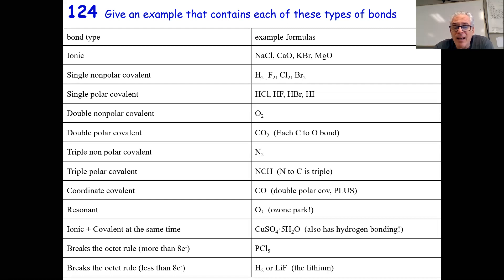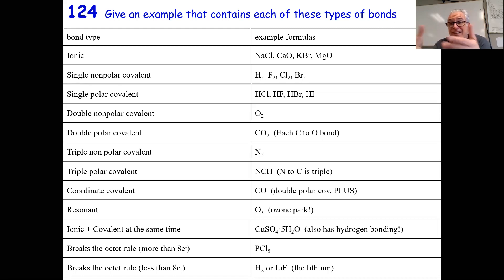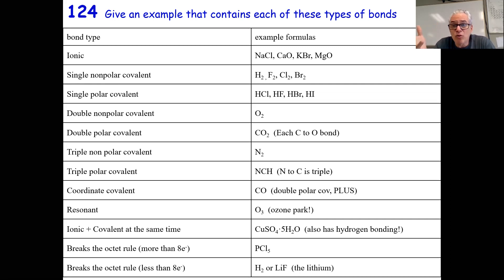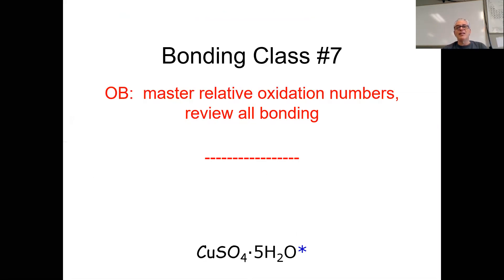Sometimes molecules break the rules. PCl₅ has phosphorus ending up with 10 electrons instead of eight — too many, but it exists and somehow works. Sometimes molecules or ionic compounds break the octet rule because they're too small. H₂: each H atom shares one electron, ending up with two shared electrons in the first orbital — not eight, but too small to have eight; it still has full orbitals. Lithium fluoride: lithium becomes a positive one ion and fluorine a negative one. Fluorine follows the octet rule, but lithium ends up with just two electrons in the first orbital. It's too small to follow the octet rule.